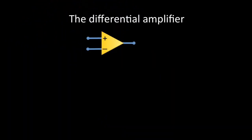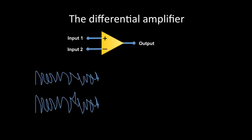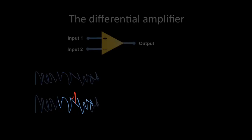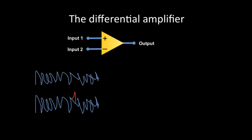EEG is recorded using the technology of the differential amplifier. The differential amplifier takes two electrical inputs and displays the output as the difference between the two. This is particularly useful for recording and displaying very small electrical signals such as those in EEG. For example, two very similar waveforms with one small difference — when placed through a differential amplifier — produce an output that is simply the difference between them, with all commonalities cancelled out.